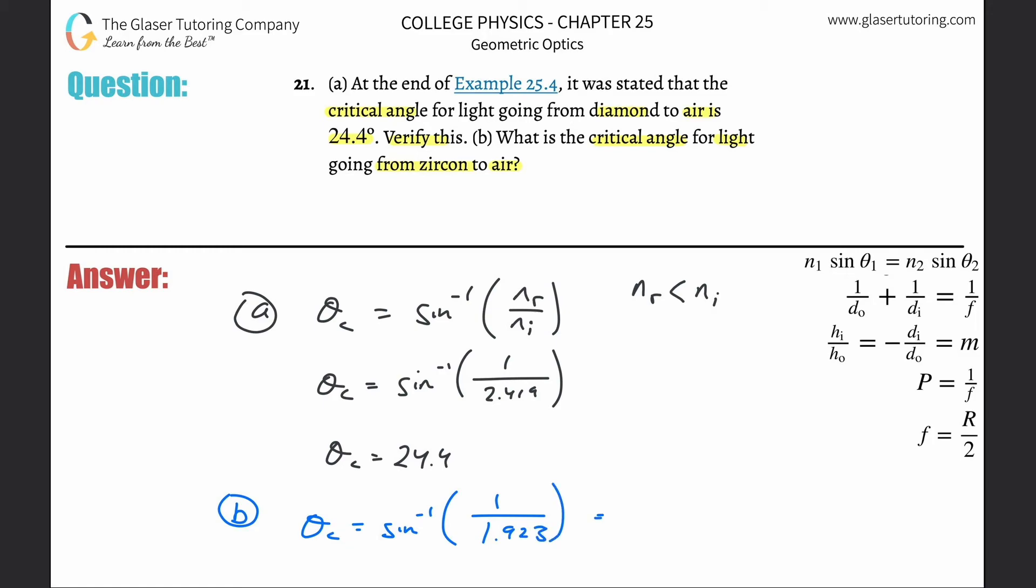Alright, and then all we got to do is just plug that on into the calculator. So inverse sine of 1 divided by 1.923, and we get a value about 31.3 degrees. And that's the critical angle.